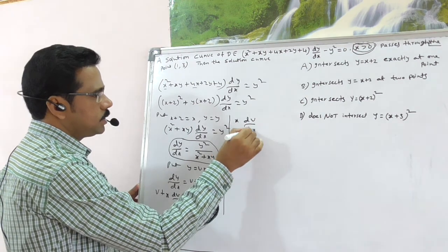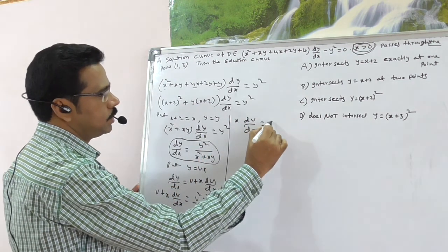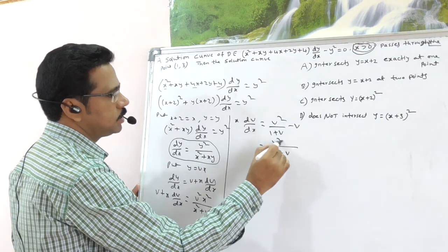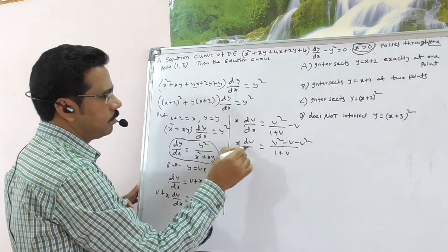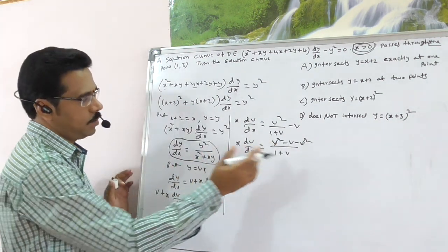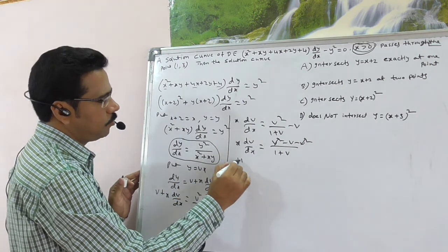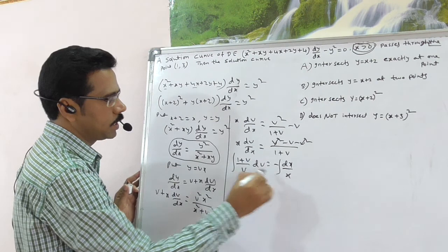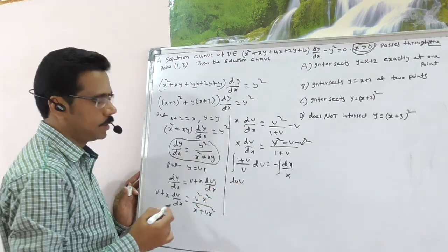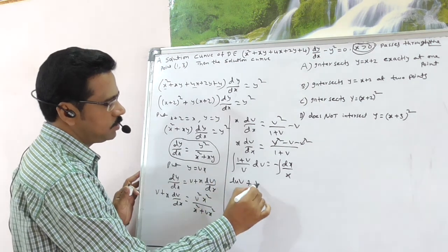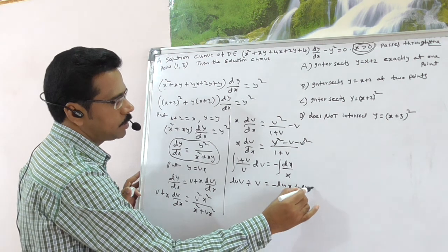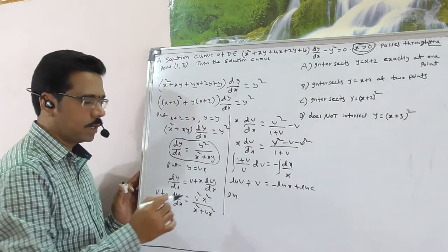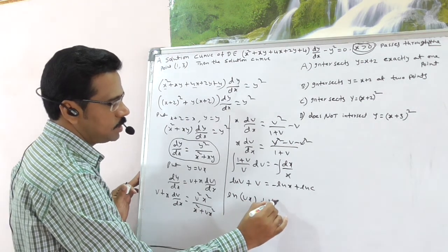So X·dV/dX = V²/(1+V) − V = (V² − V − V²)/(1+V) = −V/(1+V). Applying variable separable: (1+V)/V · dV = −dX/X. Integrating both sides: (1/V)dV + dV = −dX/X, giving log V + V = −log X + log C, i.e., log(VX) + V = log C.